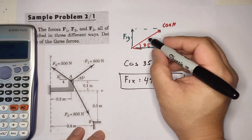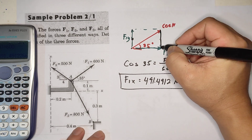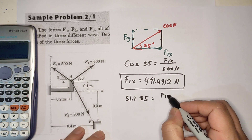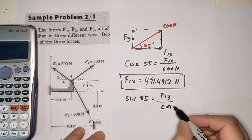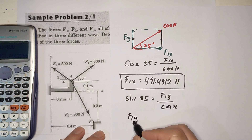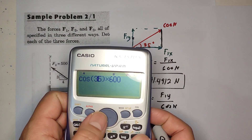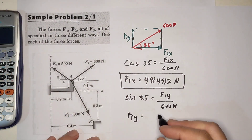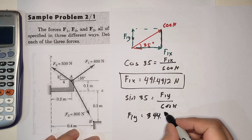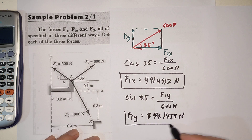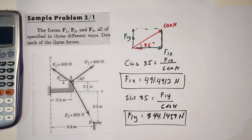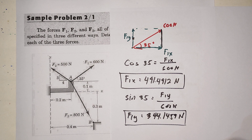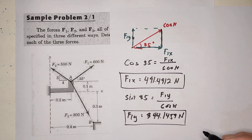Now for F1y, since this is the opposite side, you use sine 35: sine 35 equals F1y over hypotenuse 600. So F1y equals sine 35 times 600, which gives 344.1459 Newton. We'll use four decimal places here, though we're not following significant figures strictly — this is just for discussion. That's F1.